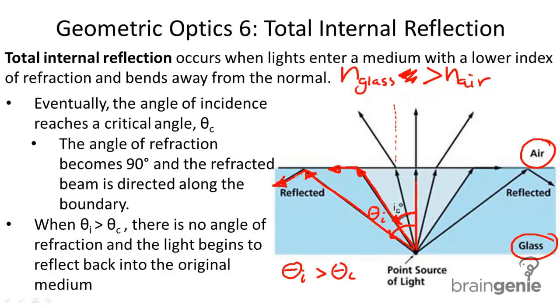This is your angle of incidence. Instead of refracting, you've crossed over, you've gone beyond the critical angle, and now the light is reflecting inside the medium. That's why we call it internal reflection.